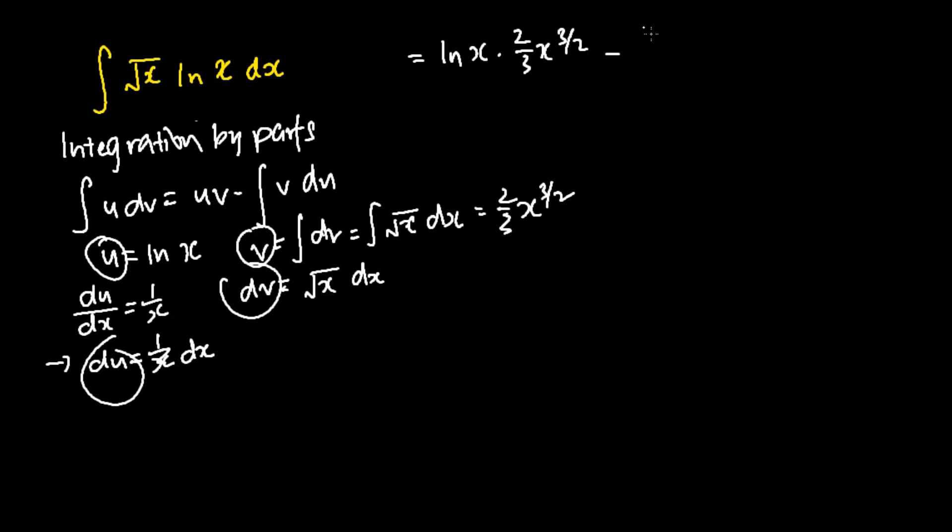subtracting away the integral of v, which is 2 over 3 x to the power 3 over 2, and my du is 1 over x dx.